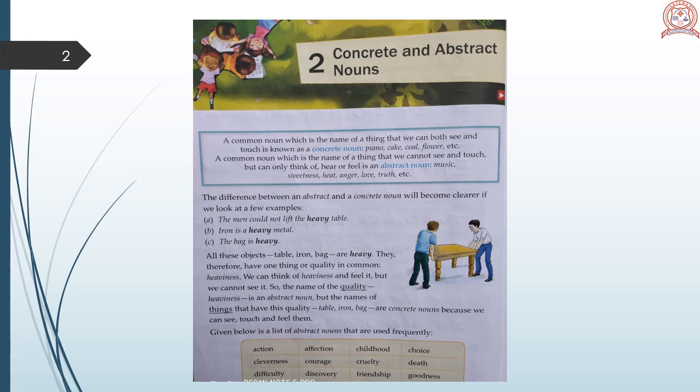Let's see an example of abstract and concrete noun. The man could not lift the heavy table. Iron is a heavy metal. The bag is heavy. All these objects, table, iron, bag are heavy. Therefore, one thing or quality in common. Heaviness. We can think of heaviness and feel it, but we cannot see it. So the name of the quality, heaviness is an abstract noun.